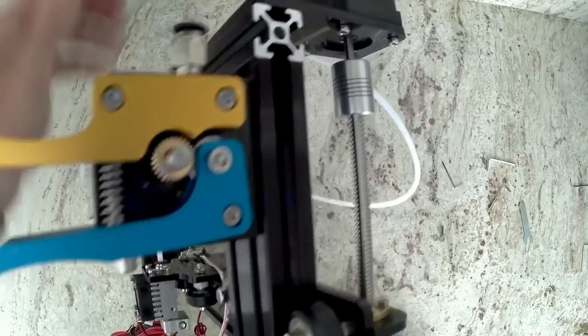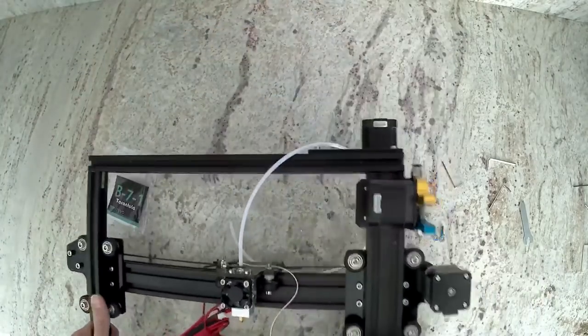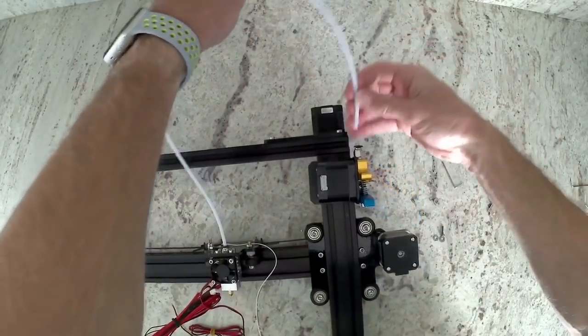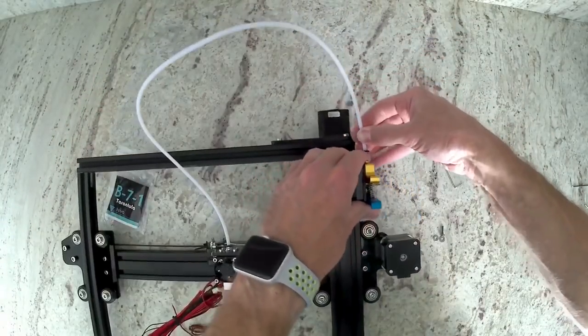Make sure that it moves freely. And then the last thing we're going to do is install the PTFE tube into the push fit fitting that is in the gold section of the extruder.